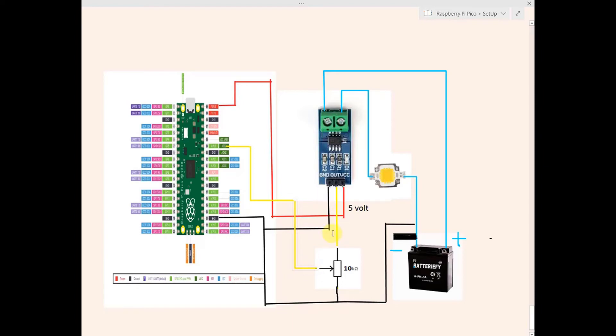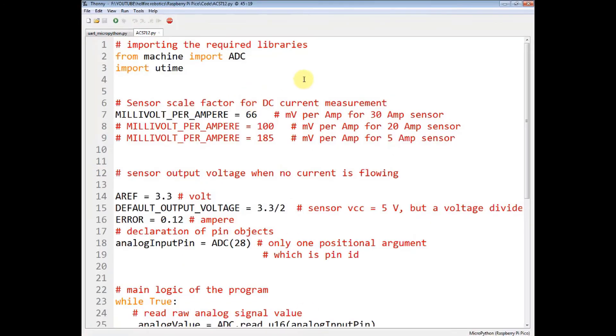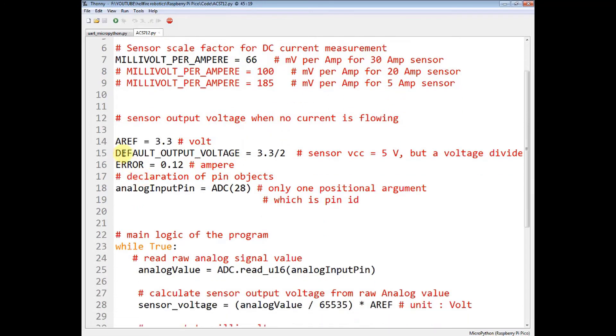So this is the basic setup and now let us look at the MicroPython script. Import the required libraries and define a constant millivolt per ampere. It is equal to 66 for the 30A sensor and these values are for other sensors of 20A and 5A. This is analog reference 3.3V.